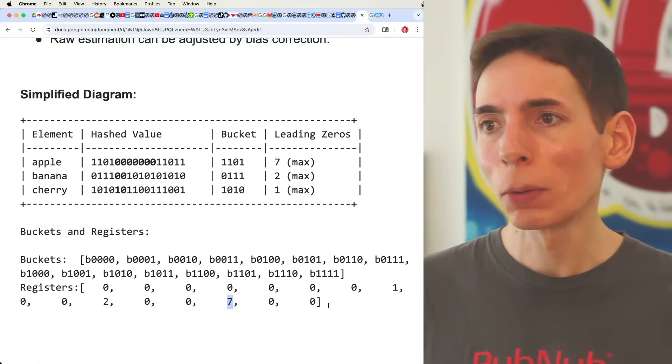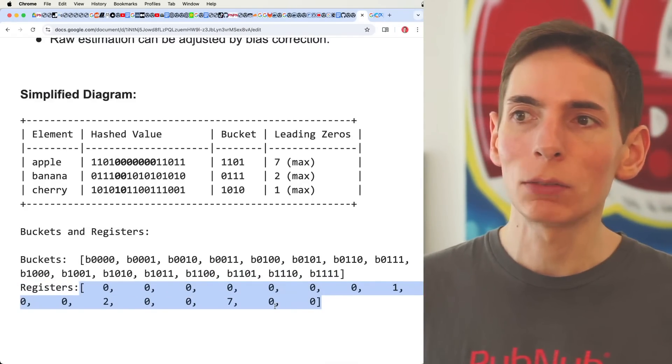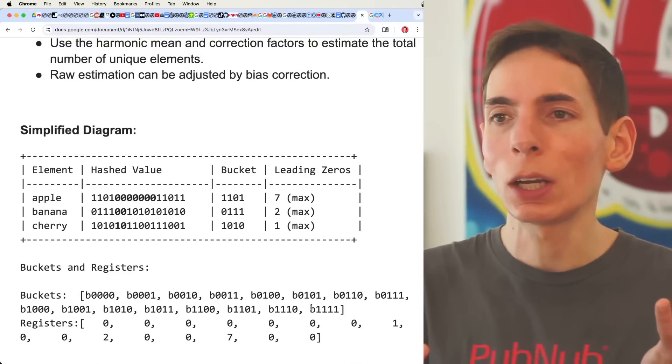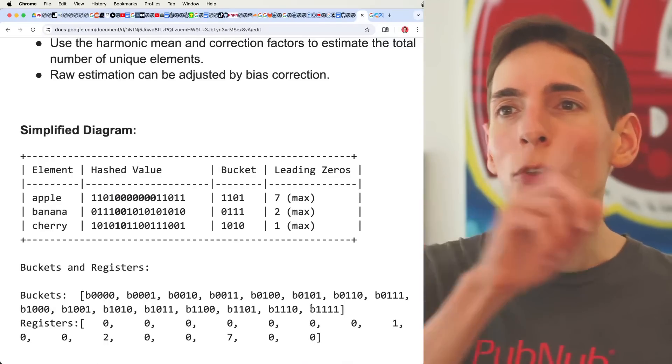That's pretty much how it works. So then you sum all these values together with an average and it gives you an essential unique cardinality count that's statistically accurate up to a certain percentage based on your bit depth.